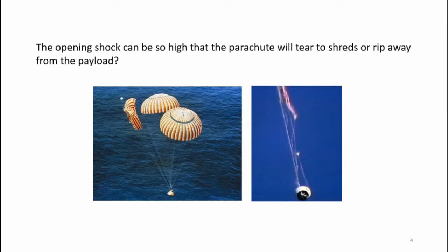In the image on the left, we see a parachute canopy failure during an actual Apollo mission. Luckily, the parachutes are redundant, so the capsule and crew survived. At the right is a recent NASA capsule test, and you can see that the parachute totally shredded and the capsule free-fell into the ocean. No one was on board, so no one got hurt during that test.